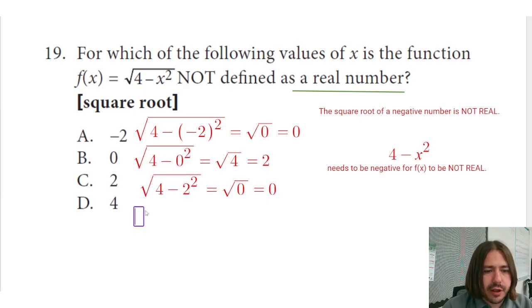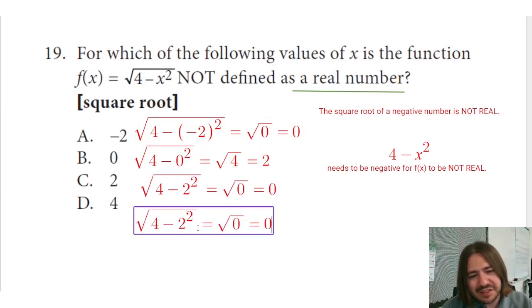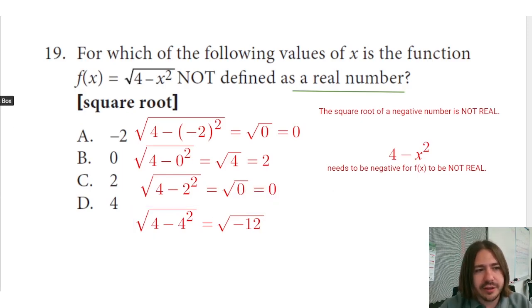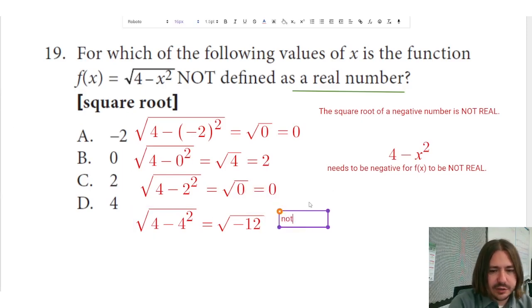Now, if we try to plug in four, we've already, you know, by process of elimination figured out our answer here. But if I try to plug in four, I get 4 minus four squared. Four squared is 16. And so four minus 16 would be negative 12. Okay, so this is going to be a non-real answer. Okay, this is not real.